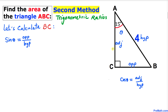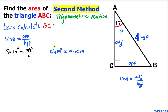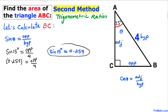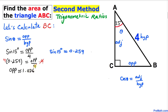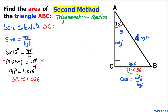Now let's calculate the opposite side BC using sine theta equals opposite over hypotenuse. Filling in the blanks: sine of 15 degrees equals BC over 4. The sine of 15 degrees is approximately 0.259, so we get 0.259 equals opposite over 4. Multiplying both sides by 4, the 4s cancel, giving us the opposite side BC approximately equal to 1.036.